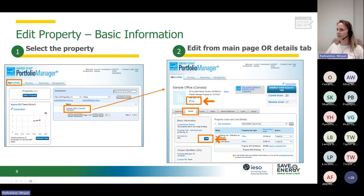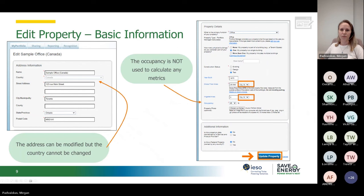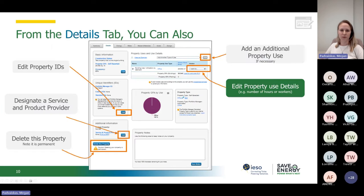To edit the basic information, go into the details tab and you'll find a basic information box. There you can click on edit and change things like your ground floor area if you've sold a portion of your building, or if your occupancy rate has changed. There is also a little edit button at the top right next to the street address. When editing the basic information, you can correct the location of your building — for example, fixing the wrong street address or changing the province from Quebec to Ontario. This will impact your weather data and may help or hurt your Energy Star score.